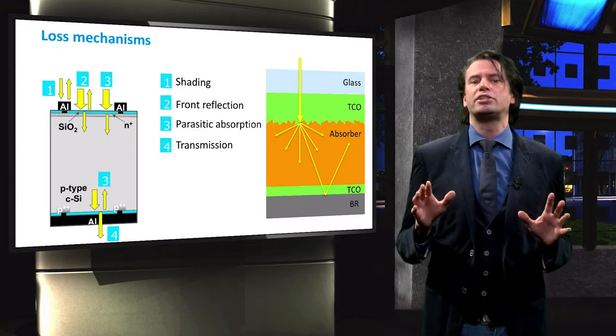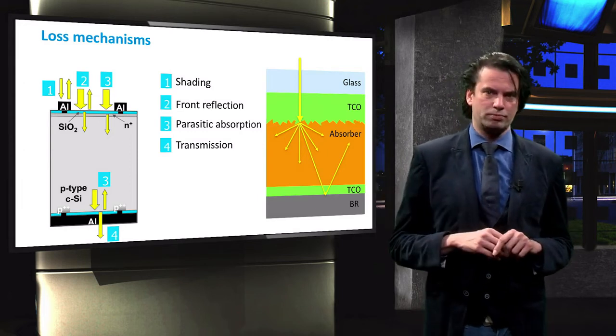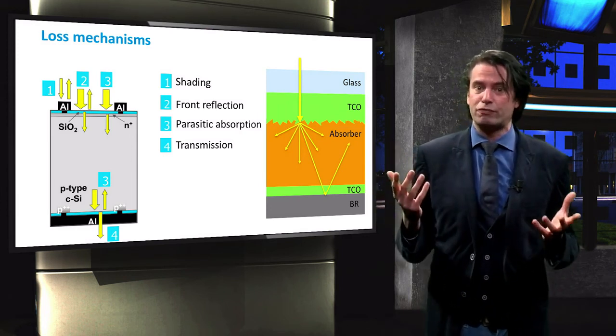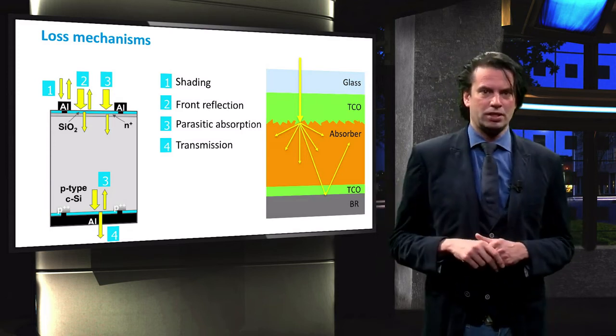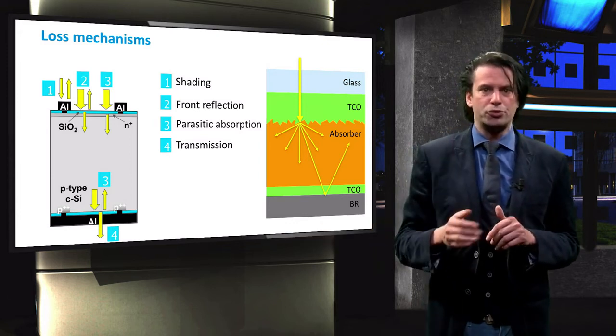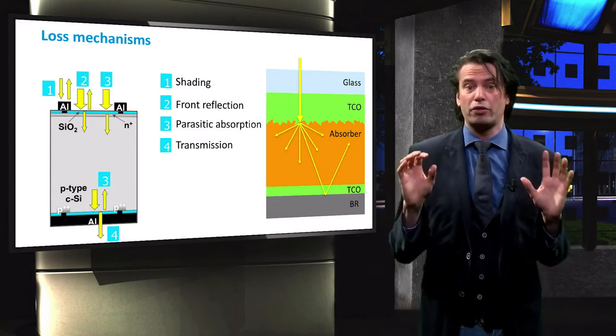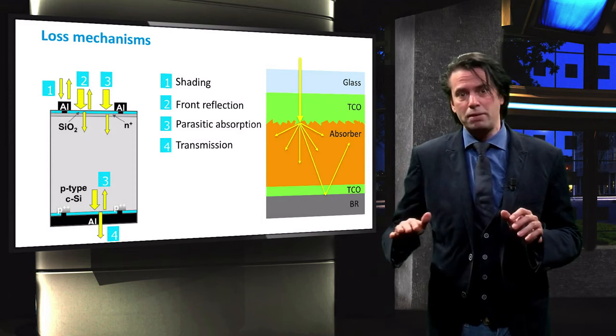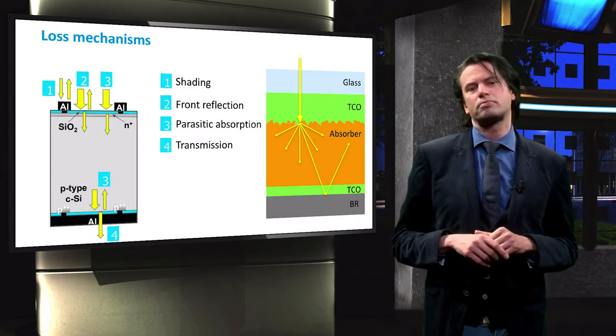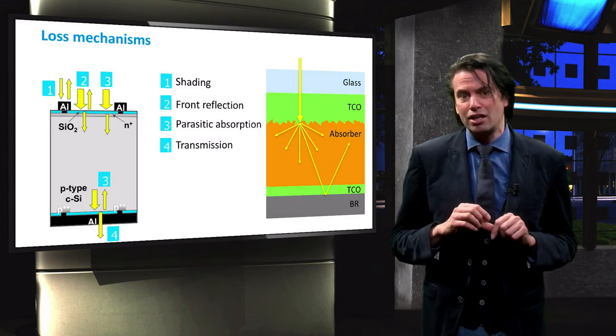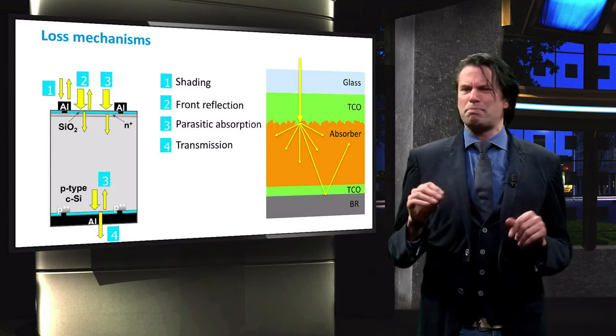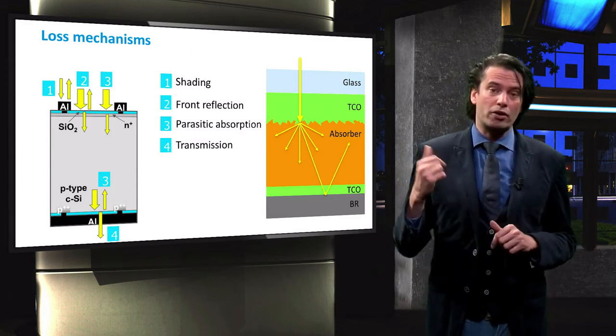Several tricks are applied to increase the path length of photons in the absorber layer. Two of these are shown in this figure. The shown cell applies light scattering at the front and a reflective layer at the back of the cell. The scattering of light is applied to deflect light away from the direction perpendicular to the surface, which is the shortest path through the cell. The farther a light beam is deflected from this perpendicular direction, the larger the path length through the absorber layer will be. A reflector at the back of the cell allows the photon to pass through the cell for a second time. The scattering of light and back reflectors are extensively discussed later on in this course.